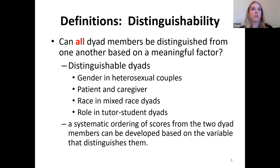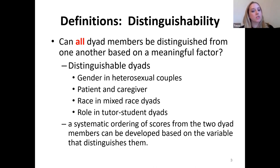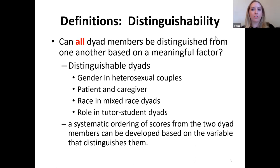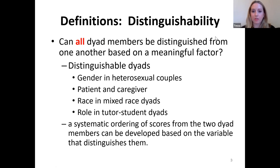In our case, role is the distinguishing factor in our tutor-student dyad. Every dyad has a tutor and a student. The key is whether there can be a systematic ordering of scores from the two dyad members based on the distinguishing variable. This needs to be something conceptually or theoretically meaningful — using whoever is taller or whose birthday came first is technically possible but not meaningful in that context.